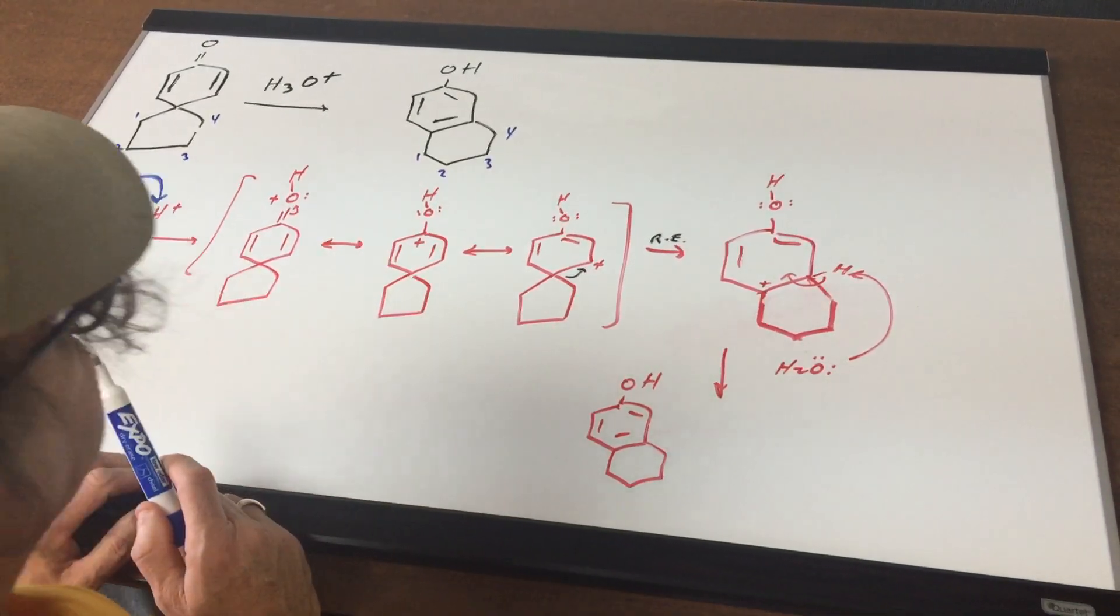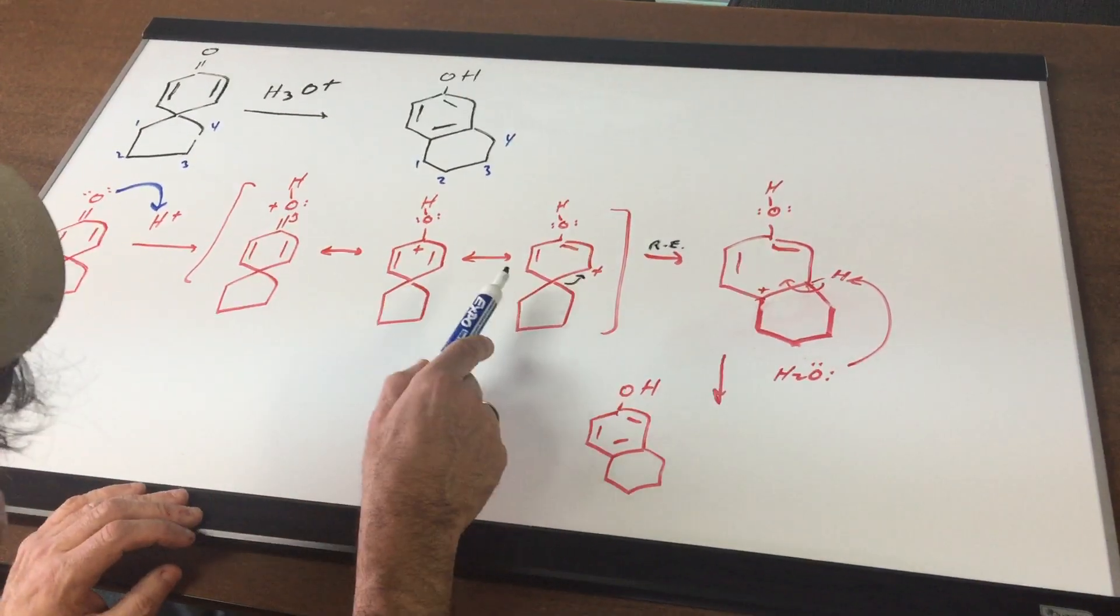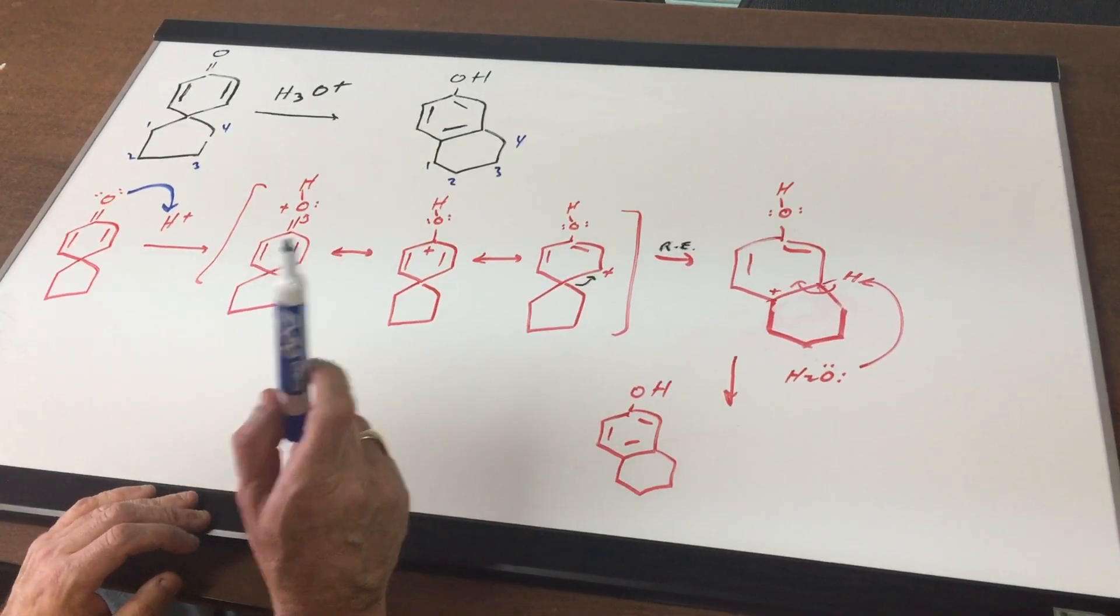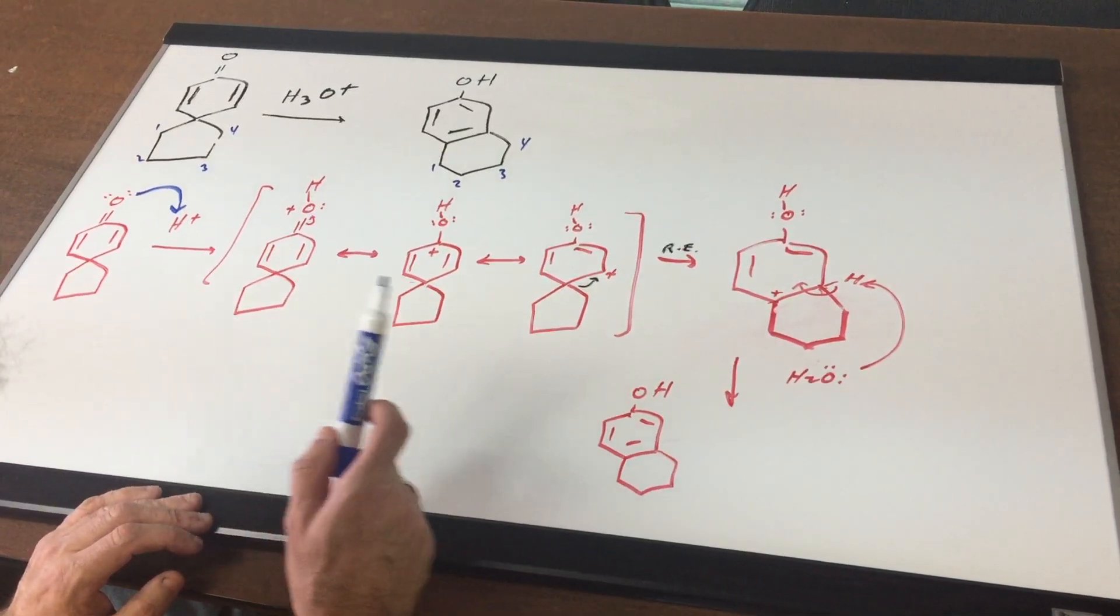Now one of the little tricks that I teach my students in advanced organic chemistry is always look at the resonance forms because one of those resonance forms may be the correct path that you need to be able to form the final product.